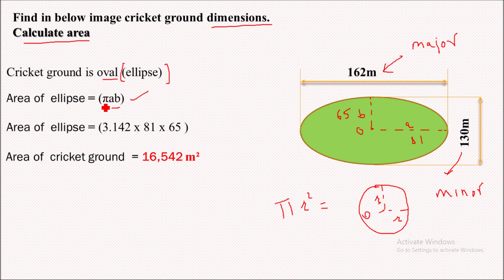So area of ellipse equals pi, the value of pi is 3.142. Putting the value of A that is 81 meter and the value of B that is 65 meter, on solving we get the area of cricket ground to be 16,542 square meter.